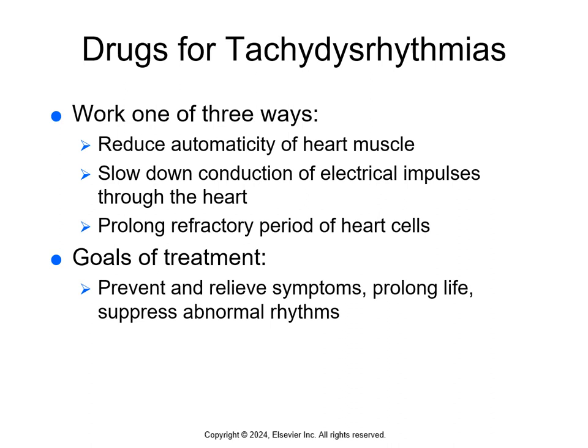Now we'll talk about tachydysrhythmias — "tachy" meaning too fast, so these are dysrhythmias that are too fast. Drugs for tachydysrhythmias can reduce the automaticity of the heart muscle, slow the conduction of electrical impulses through the heart, prolong the refractory period, or do multiple of these actions. The goals of these drugs are to prevent and relieve symptoms, prolong life, and suppress abnormal rhythms.